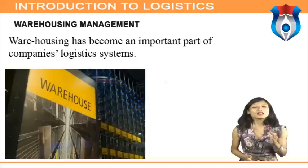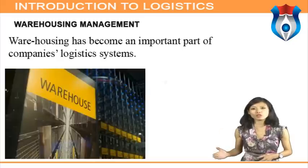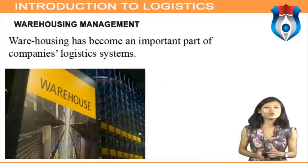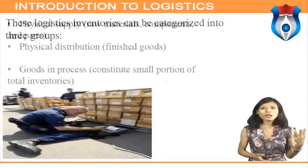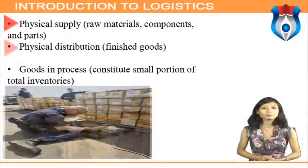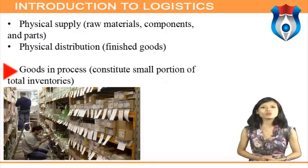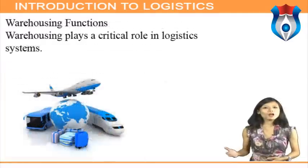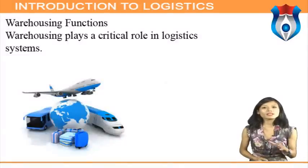Warehousing has become an important part of companies' logistics systems, providing storage of goods at and between origin and destination points and giving management information about the status, disposition, and condition of inventories. Logistics inventories can be categorized into three groups: physical supply (raw materials, components, and parts), physical distribution (finished goods), and goods in process — which constitute a small portion of total inventories. Warehousing plays a critical role in providing the desired customer service levels.